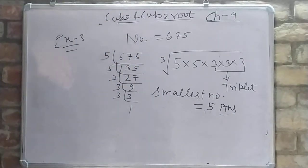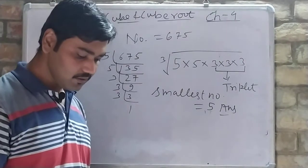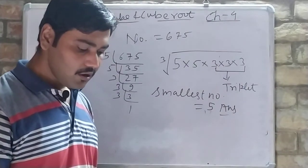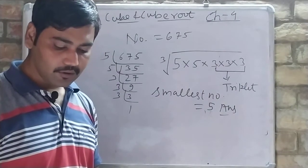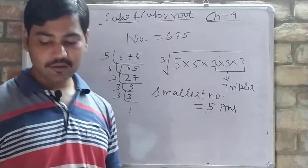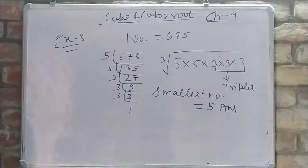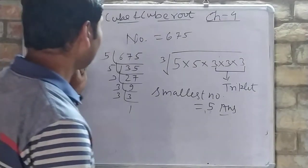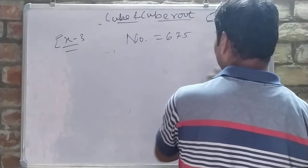This is how you solve that type of question. Now see the second part of Example 3: by which number must 1080 be divided so that the quotient is a perfect cube? It is a similar case — we need to find the number by which we divide 1080 to make it a perfect cube.